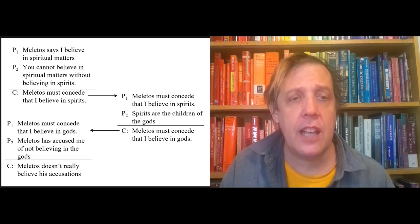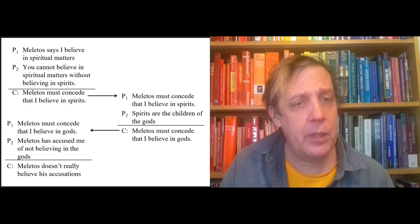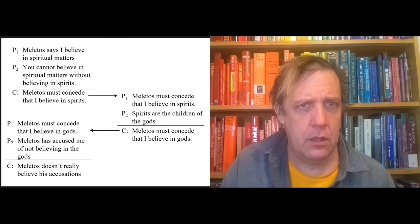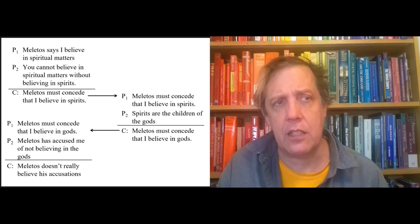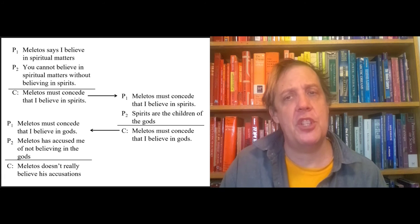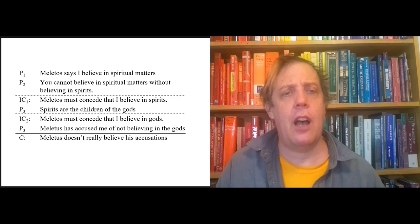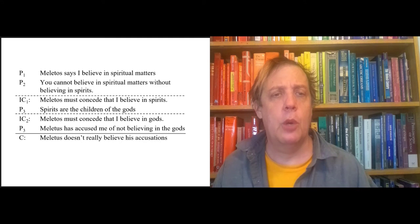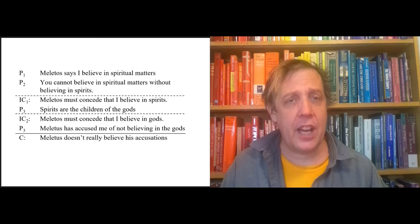This then gets fed into the next argument. That C becomes a new P1. Meletus must concede that I believe in gods, but he has accused me of not believing in the gods. Meletus doesn't really believe his accusations, then. He's lying. He's a hypocrite. He is just throwing charges at me to hurt me. He's not interested in the truth. So we've got three arguments here that form a chain, and we can actually represent them like this, where the statements that form premises in one argument and conclusions for the earlier argument, we can label intermediate conclusions, and we'll mark them with a dotted line.